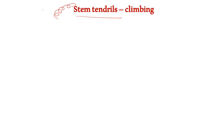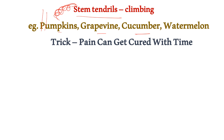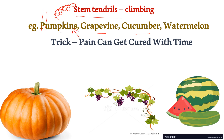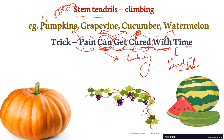Next is stem tendrils. Tendrils are structures that help weaker plants climb onto something. The examples are pumpkin, grapevine, cucumber, and watermelon. The trick is: 'Pain can get cured with time.' From 'pain' it's pumpkin, from 'can' it's cucumber, from 'get' it's grapevine, from 'with' it's watermelon, and from 'time' it's tendril — indicating these are climbing plants with tendrils.